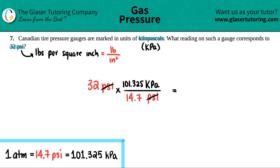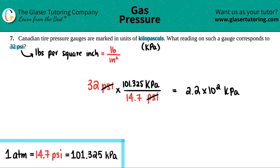The answer is 2.2 times 10 to the second kilopascals — you could also say 220 kilopascals. I'll express it in scientific notation. Just remember that these two pressure units are equivalent: 32 psi is the same thing as 220 kPa, and that's the end of this question.